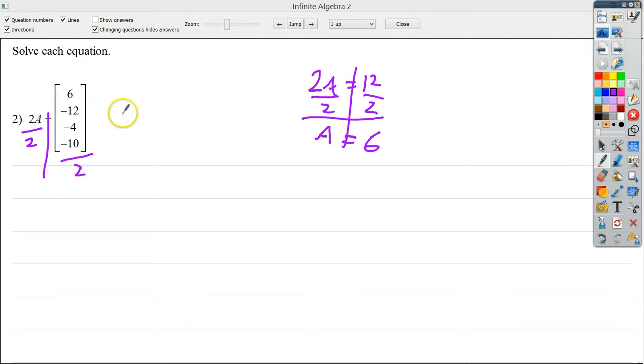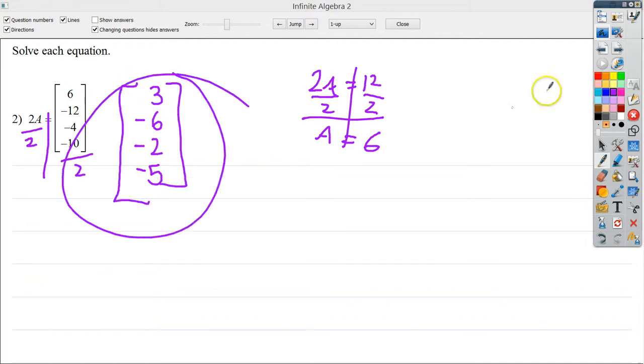So 6 divided by 2 is equal to 3. Negative 12 divided by 2 is negative 6. Negative 4 divided by negative 2 is negative 2. And negative 10 divided by 2 is negative 5. So there is my final answer for that one.